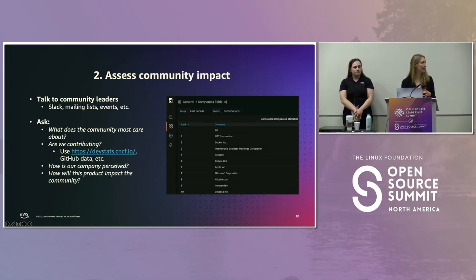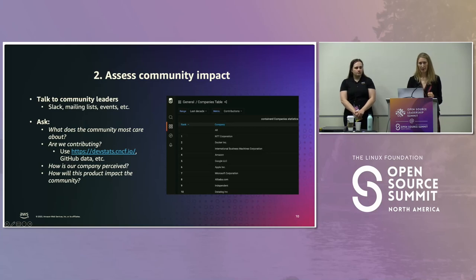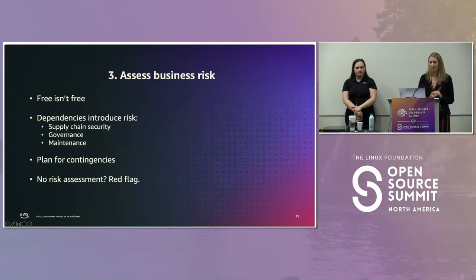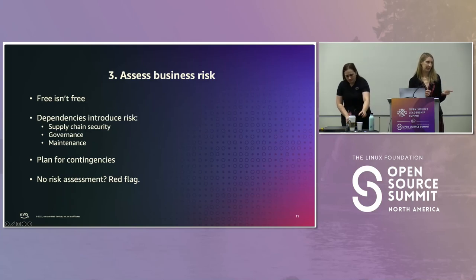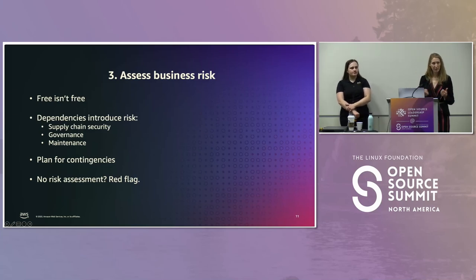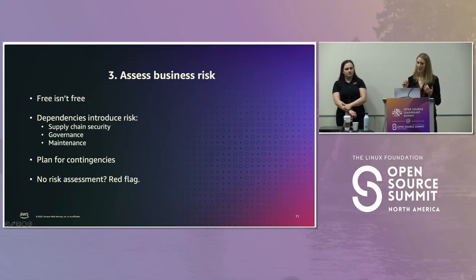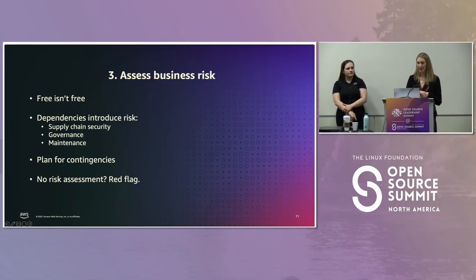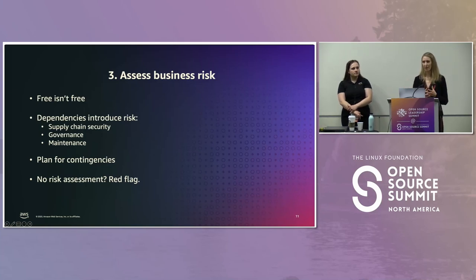Then ask: how will this product impact our community? That's a really key question. Will they welcome our product or will they consider it a threat? Learning about the community is key to being able to assess risk. Free is not free when it comes to open source. You can download the code from the internet and use it — that means getting to market faster and being able to iterate and innovate. But there are risks, because now you're taking a dependency on that community and you're reliant on people outside your company to maintain the code your product depends on.